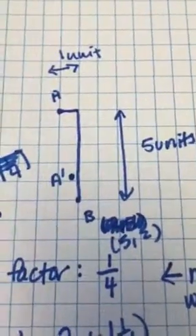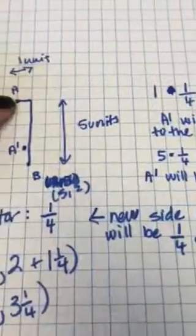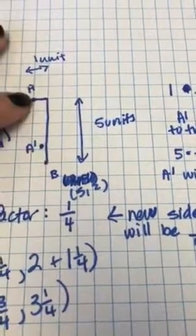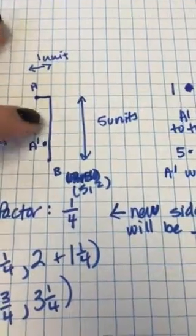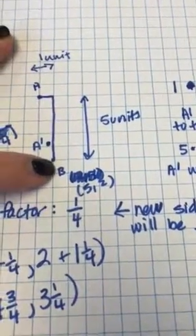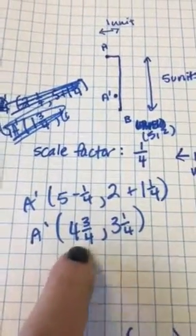When I know that point B is at five comma two, so its x-coordinate is five and its y-coordinate is two, I can use that to determine where A prime is. A prime is going to be one-fourth of the distance that A was from B when we're talking about horizontal distance. So if B horizontally on the x-axis is at five, if I subtract one-fourth of a unit from five, I'm going to get the new x-coordinate for A prime, four and three-fourths.